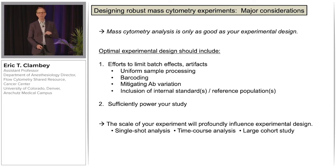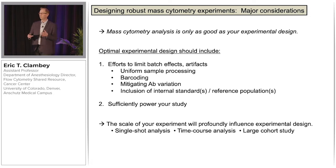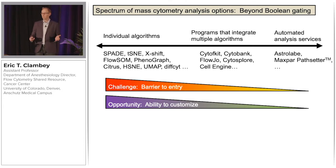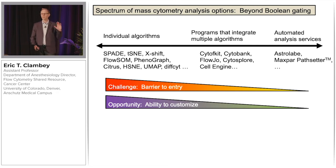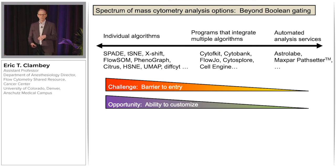The number of safeguards you need to implement to mitigate technical variation is influenced by the complexity of your study, with longitudinal analyses and large cohorts requiring multiple protective mechanisms. Going beyond Boolean gating, there are a wide variety of analysis options. On the left are many individual standalone algorithms, but there are also programs that integrate multiple algorithms, as well as fully automated analysis services, and I'll focus primarily on the individual algorithms.